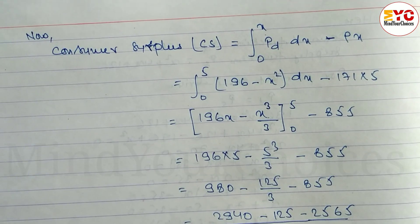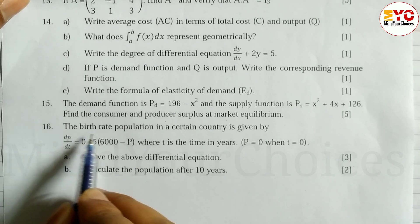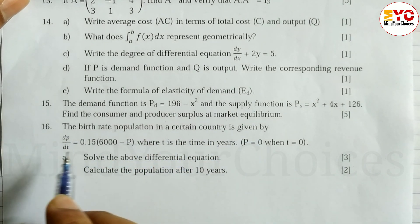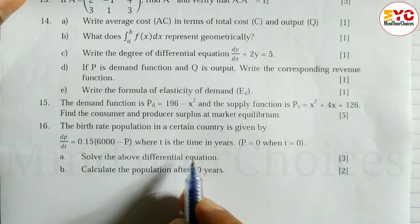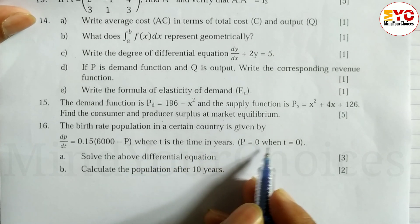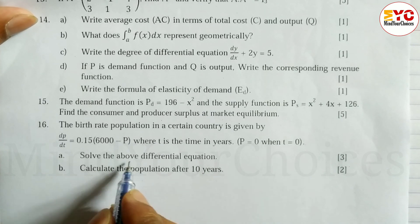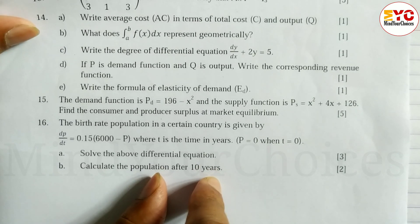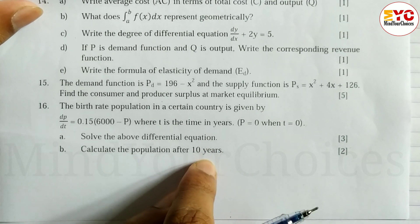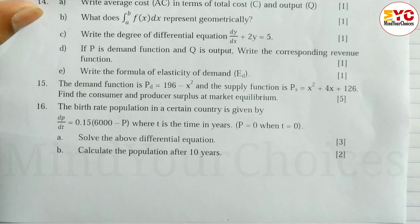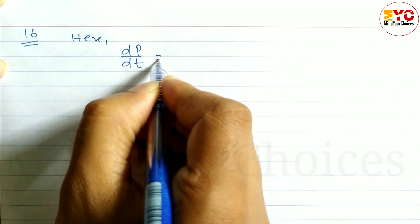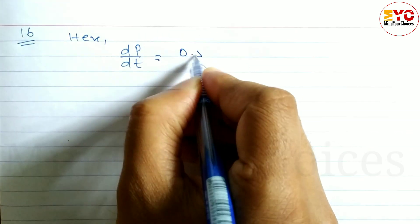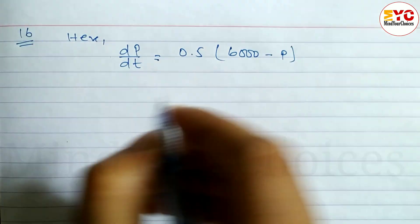Now question number 16. The birth rate population in a certain country is given by a differential equation, where t is time in years, p equals 0 when t equals 0. We need to solve the differential equation and calculate the population after 10 years. The equation is: dp/dt equals 0.5 times (6000 minus p).